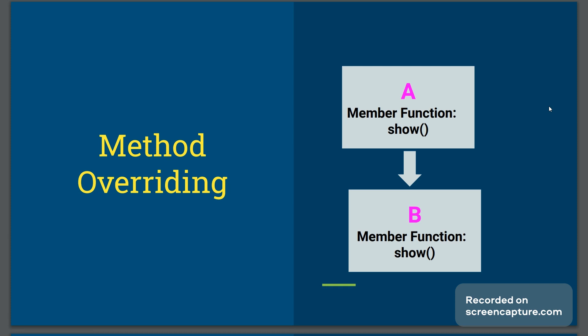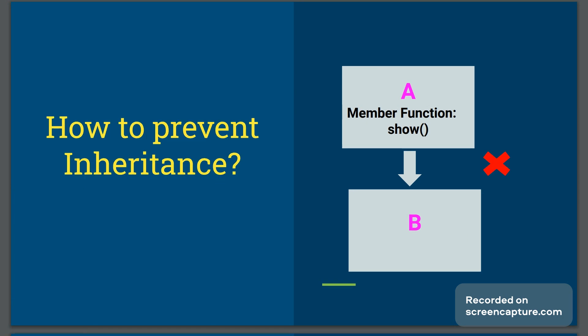Next, we look at method overriding. Method overriding means when a method in the base class and in the derived class have the same name and the same signature — same number of arguments, type of arguments, and return type — but different behavior. For example, base class A has a show() function and derived class B also has a show() function with the same name and same signature.